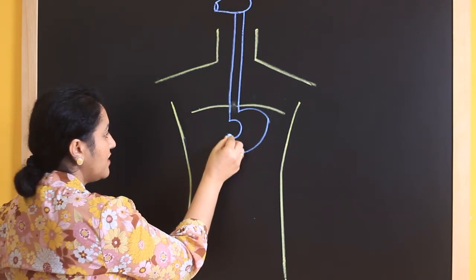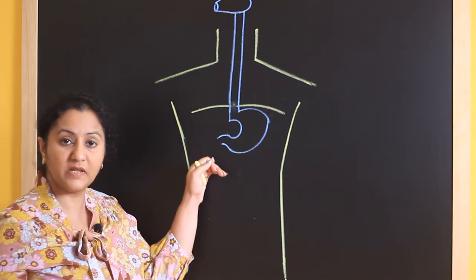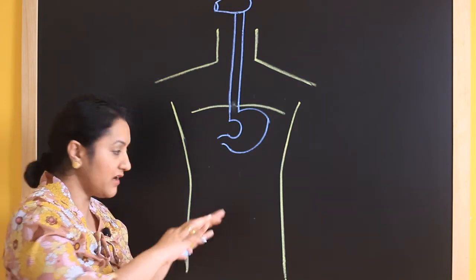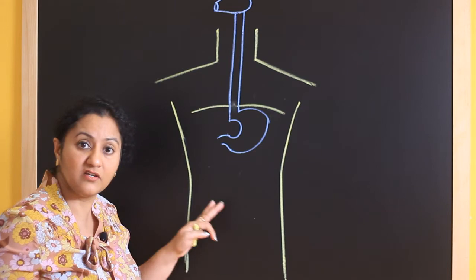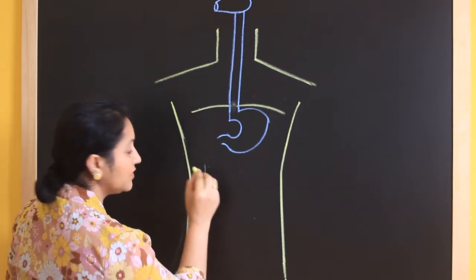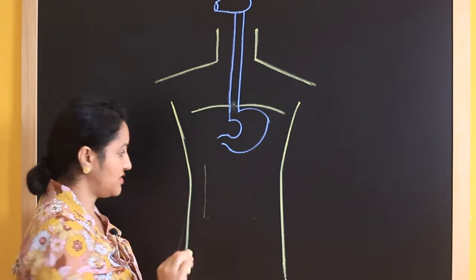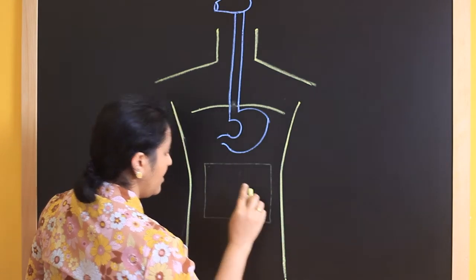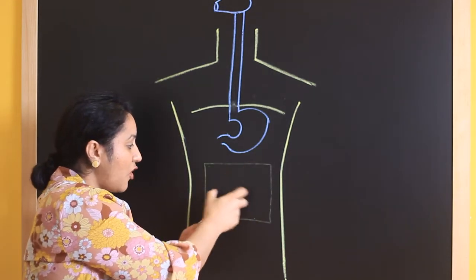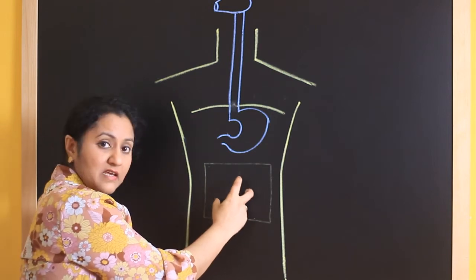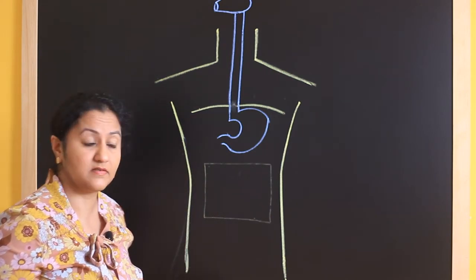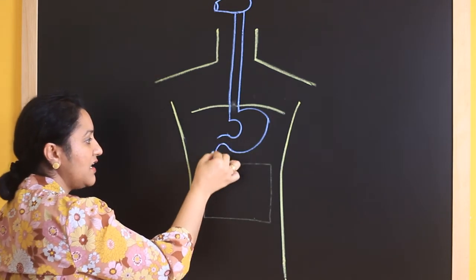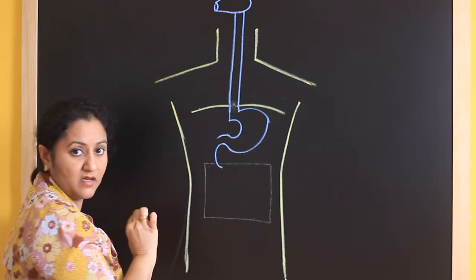Then after the stomach comes the small intestine. Now before completing the small intestine, I will give you another tip where you can draw a square here in the abdominal region and put the entire small intestine into that square. Now this should be using very fine or light lines. Now why did we draw a square? So that we can draw all the entire highly coiled small intestine inside. This area is always C shaped. This is duodenum.